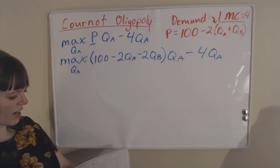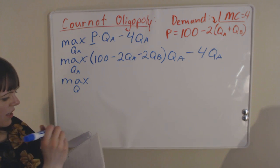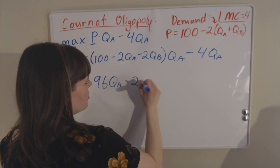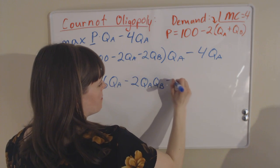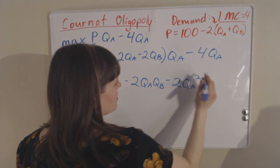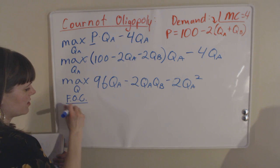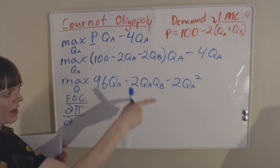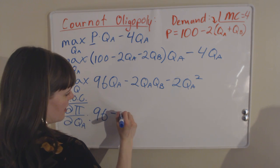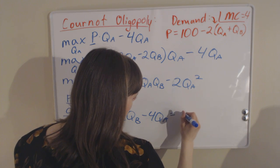Based on that, we can solve down the algebra and simplify a little bit to get 96QA minus 2QA QB minus 2QA squared. Now we can take our first order conditions by taking the partial derivative of that payoff function with respect to QA, and we get 96 minus 2QB minus 4QA equals 0.